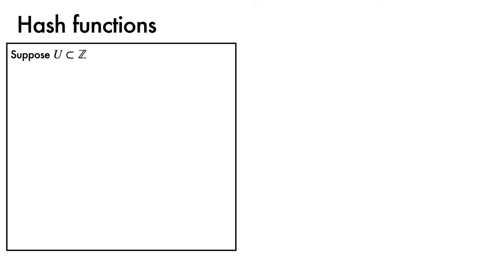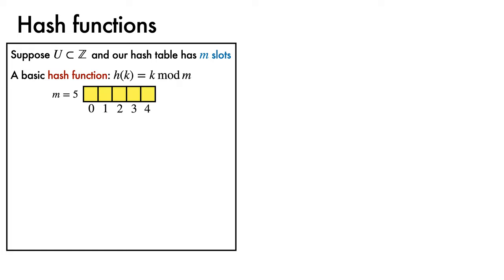Let's look in more detail at hash functions. We'll start by supposing that our universe of keys U lies within the set of integers Z, and that our hash table has m slots. A basic hash function to pack integer keys into these slots is to compute the value of the key k modulo m. For example, if we have a hash table with 5 slots, and 3 objects x0, x1, and x2, with keys 2, 8, and 23, we can compute the slots by executing the hash function.